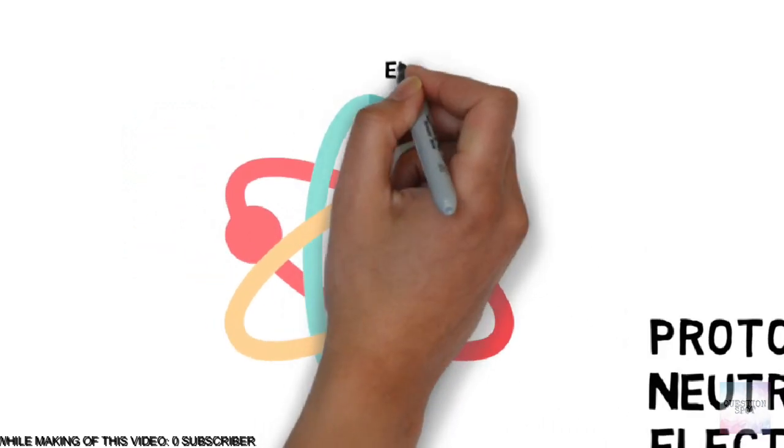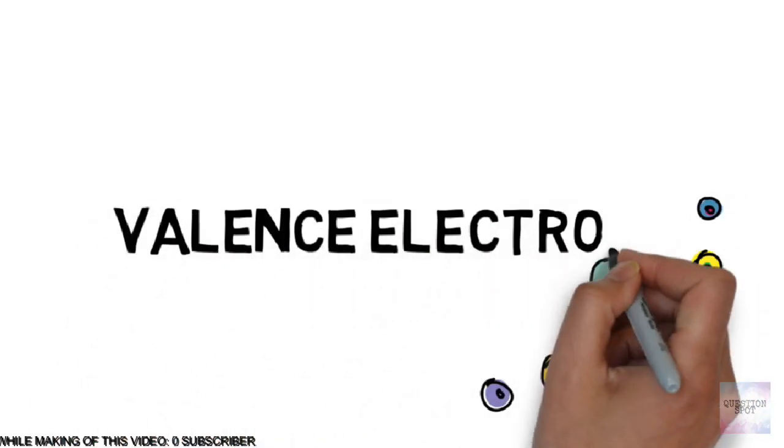Electrons revolve around the nucleus in specific orbits. The electrons which revolve around the atom in the last orbit are known as valence electrons.